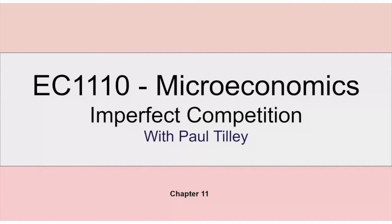What we're talking about this morning and in the next couple of classes is imperfect competition. We've gone through all the extremes — the competitive market and its implications, and the monopoly market. Now we're looking at the in-between areas. When we talk about imperfect competition, we're really talking about two major defined types of competition.